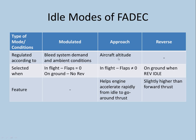Approach idle is based on aircraft altitude when coming into approach. In flight, it applies when flaps are not at zero — any configuration other than clean moves you to approach idle. Approach idle is important because it helps the engine accelerate rapidly from idle to go-around thrust; jet engines need spool-up time, and approach idle accounts for that. Reverse idle functions when reversers are selected on the ground. Notably, reverse idle is slightly higher than forward idle to improve braking efficiency.